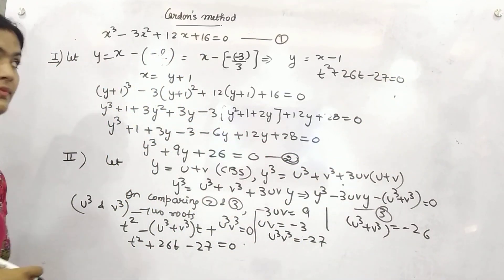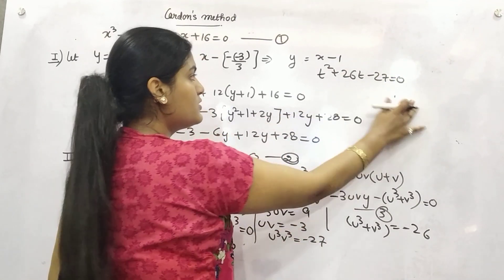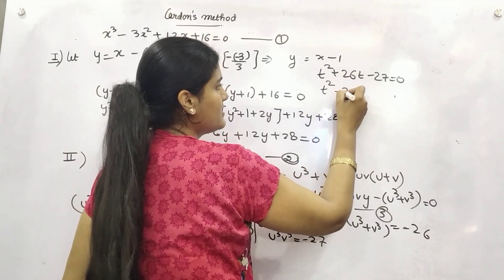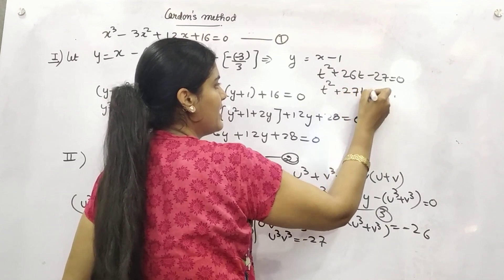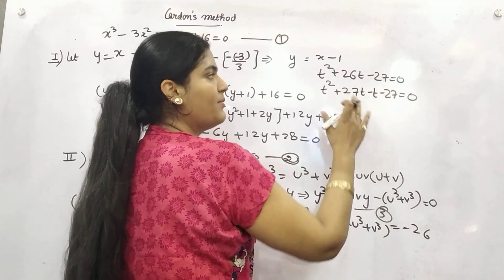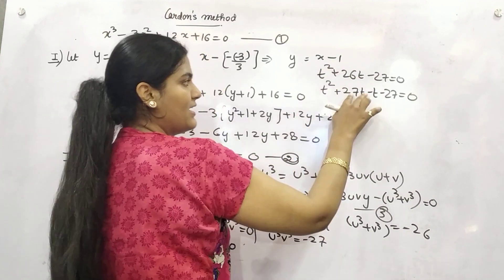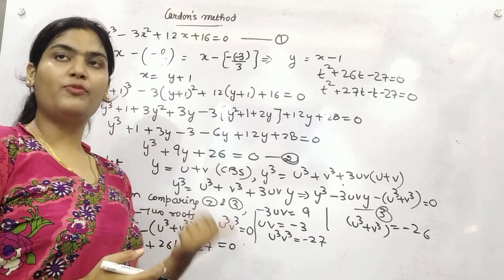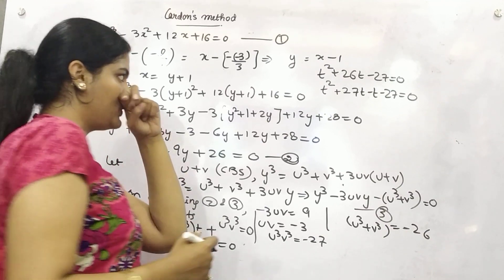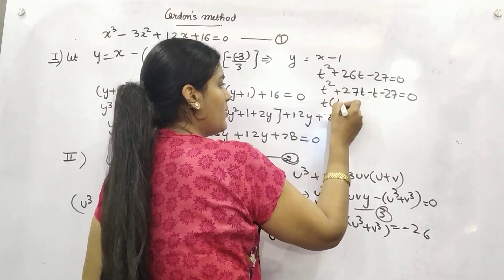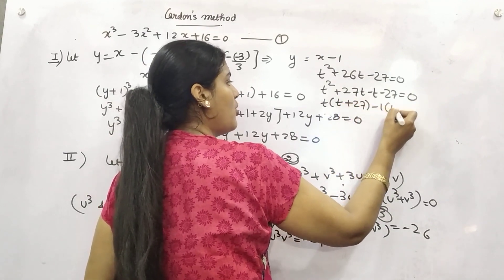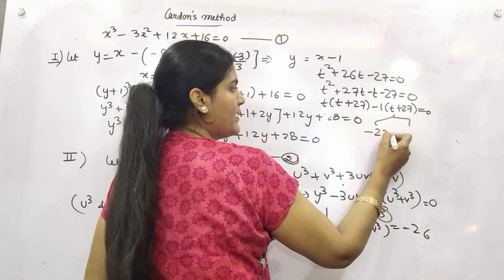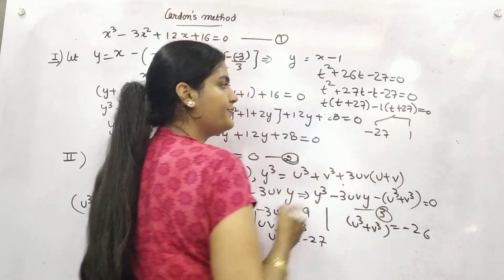You know how to solve it? You do. So t square. What's the factor of this? You can write it as plus 27t minus t. Splitting the term method. 27 minus 1 is 26. And if you multiply this, it will turn out as a product of the highest power coefficient and constant. Take t common. So t plus 27 minus 1 common t plus 27. So there are two values of t. One is minus 27 and one is 1.